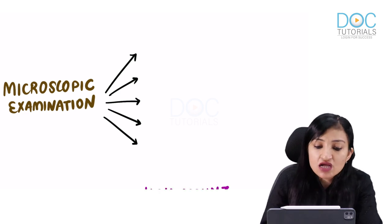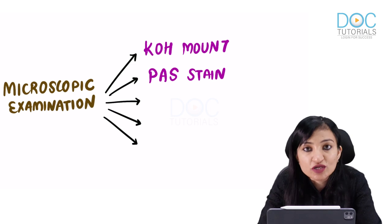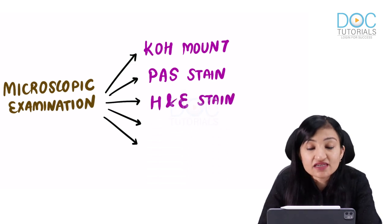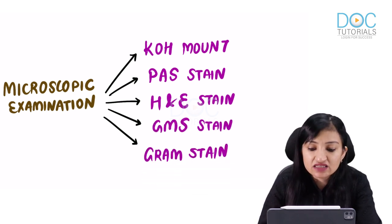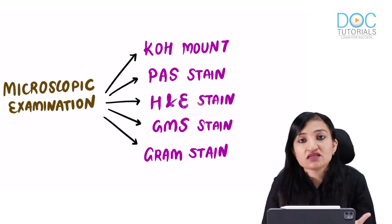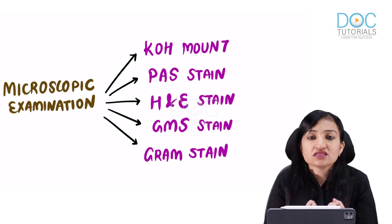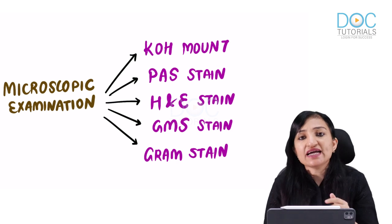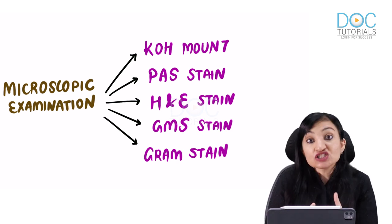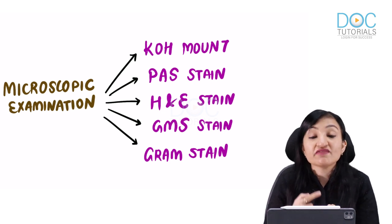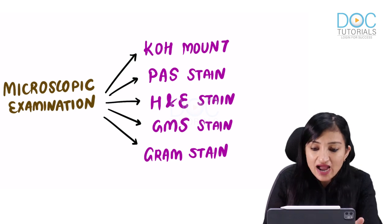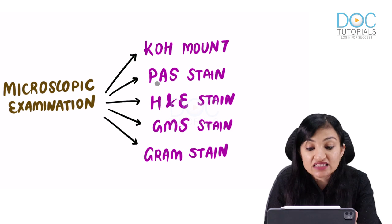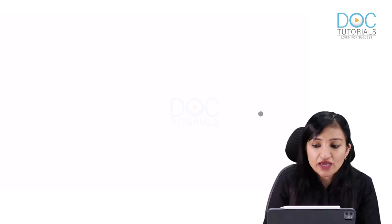For microscopic examination, you can go for KOH mount, Periodic Acid Schiff (PAS) stain, Hematoxylin and Eosin stain, Gomori Methenamine Silver (GMS) stain, or Gram stain. The best stain is PAS; GMS is also good. Gram stain is unreliable for filamentous fungi — all fungi are gram positive, but filamentous fungi take up a very faint blue color and can be missed. Gram stain is better suited for yeast or yeast-like infections like Candida or Cryptococcus.